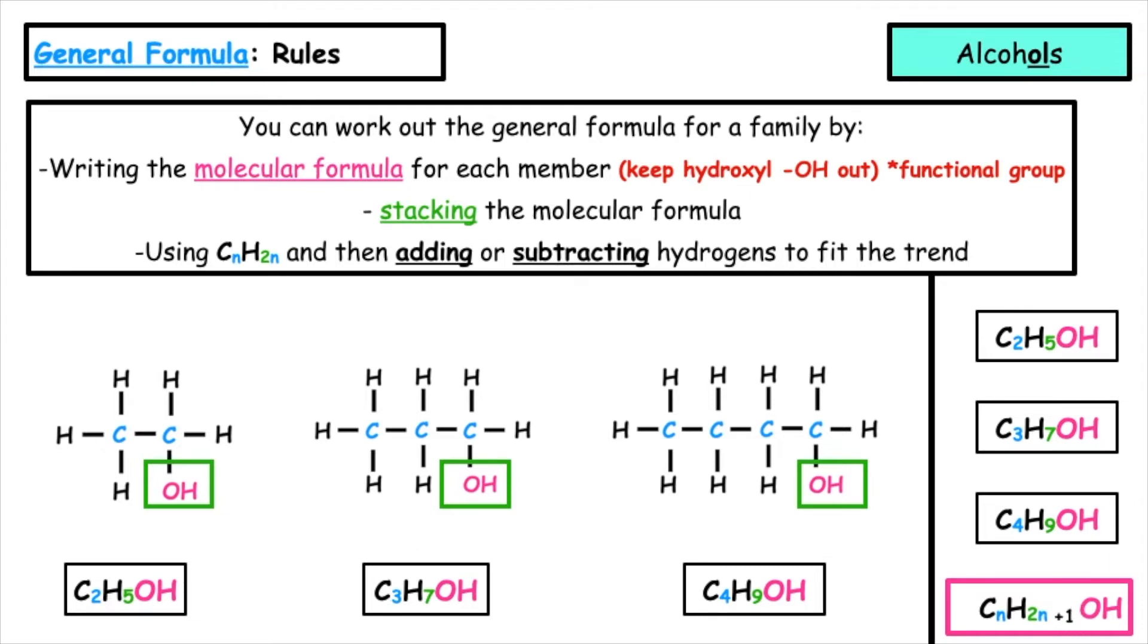For three carbons, three times two is six, how do we get to seven? Plus one. Four carbons times two gives us eight, plus one to give us nine hydrogens, then we put the functional group outside. So the general formula for the alcohols is CnH2N plus 1OH.